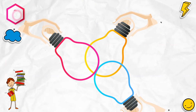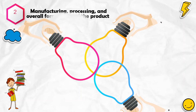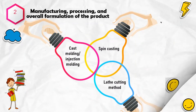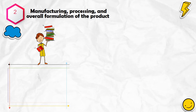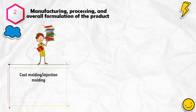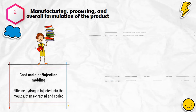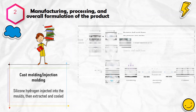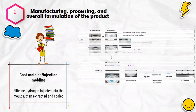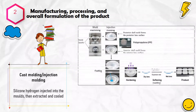Secondly, is manufacturing, processing, and overall formulation of the product. Contact lenses can be made in various ways: cast molding, spin casting, and lathe cutting. The most used type is cast molding, also known as injection molding. The silicone hydrogel is first injected under pressure into the molds, then extracted and cooled before being inspected for damage. All of this is accomplished via computer-assisted technologies.